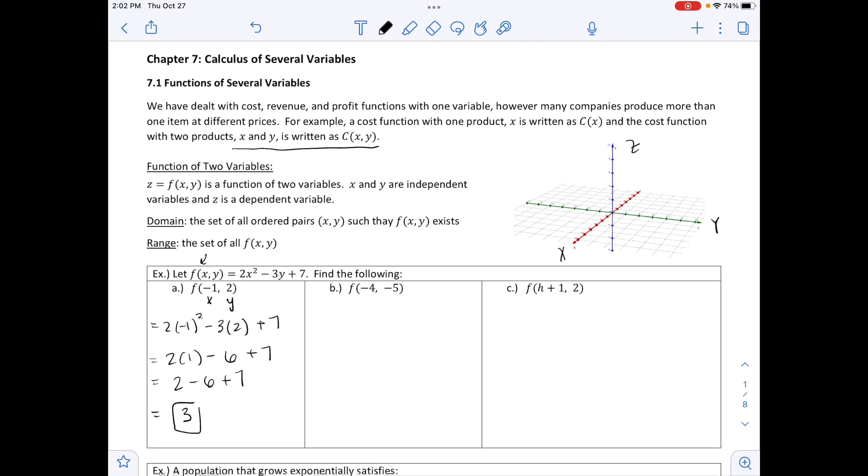Likewise, part B says F of negative 4 comma negative 5. So again, X is negative 4, Y is negative 5. And substituting those into our function, we have 2 times negative 4 squared minus 3 times negative 5 plus 7. And then working this out, we have 2 times 16 plus 15 plus 7, or 32 plus 15 plus 7. And adding up all those values, we get a total of 54.